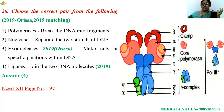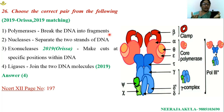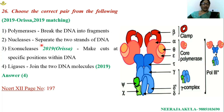RNA polymerase is involved in the transcription process. Helicase is an enzyme responsible for unwinding of the two strands of DNA, involved in breakdown of hydrogen bonds. During transcription, RNA polymerase itself is responsible for unwinding or breakdown of hydrogen bonds. RNA polymerase is highly versatile in nature.